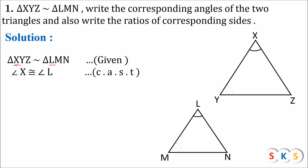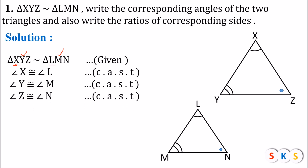Similarly, angle Y is congruent to angle M. How do we know? The second letter of triangle XYZ is Y and the second letter of triangle LMN is M. So angle Y is congruent to angle M. Similarly, angle Z is congruent to angle N. The reason is CAST — corresponding angles of similar triangles. So the first part of this question, writing pairs of corresponding angles, is complete.